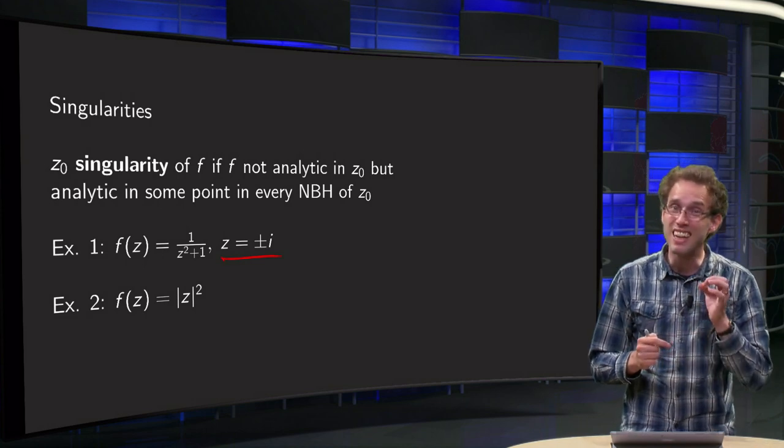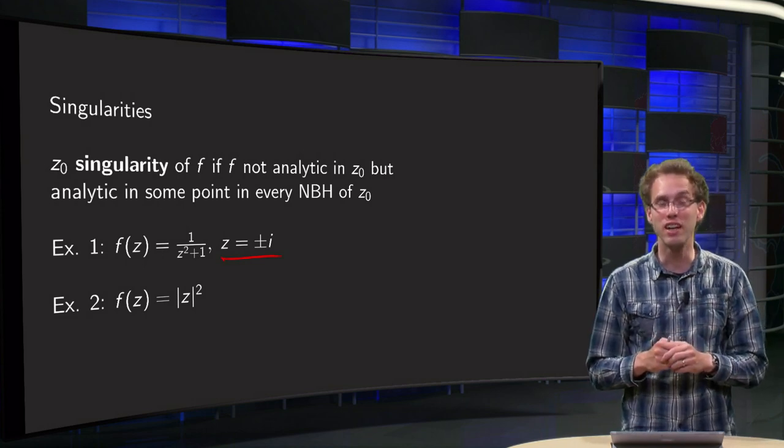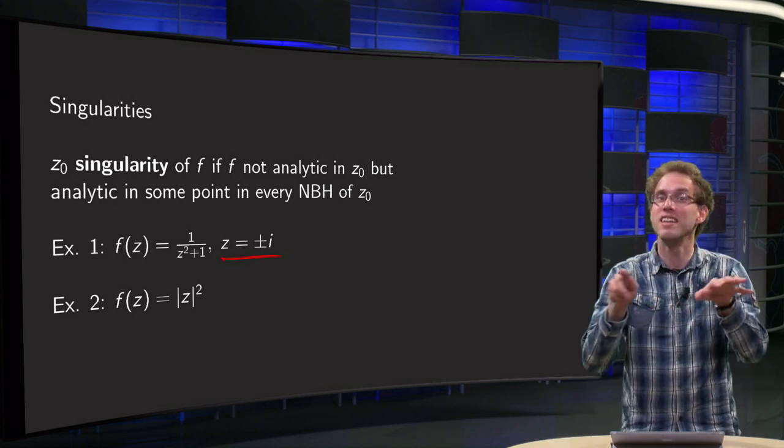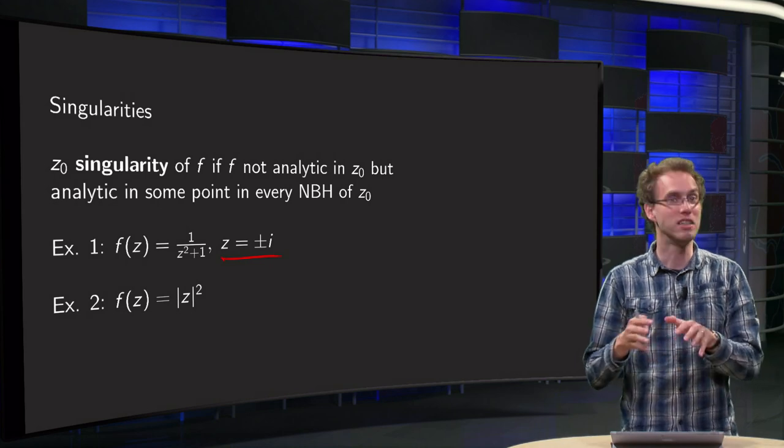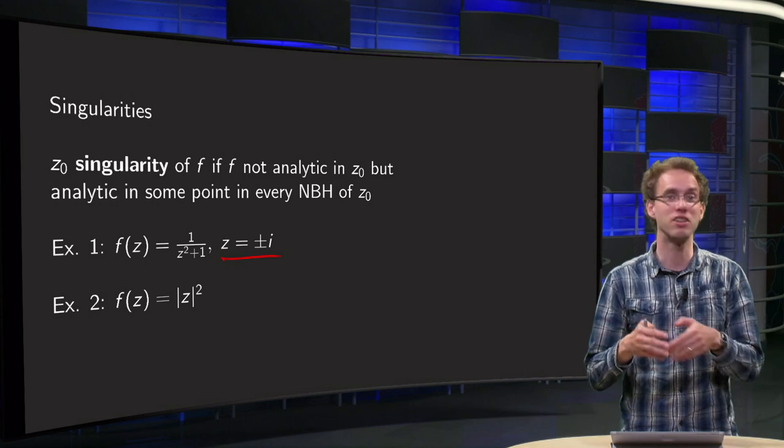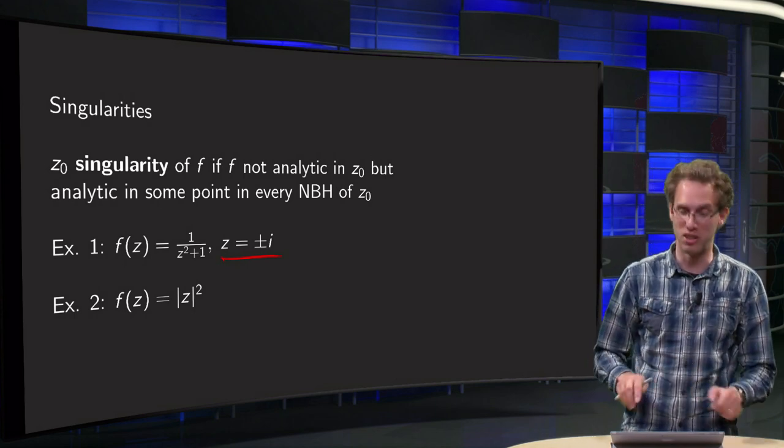So in particular, it does not have any singularities. Because for a singularity you need to be singular in a point, but have a friendly neighbor somewhere else. But this modulus of z squared has no friendly neighbors. It is nowhere analytic, so it also doesn't have singularities.